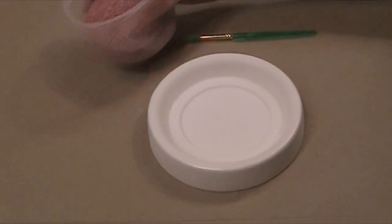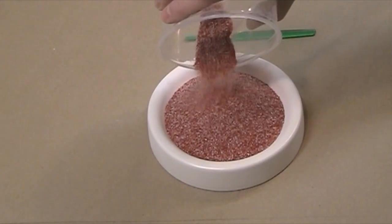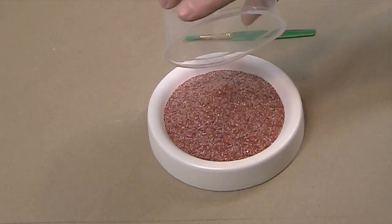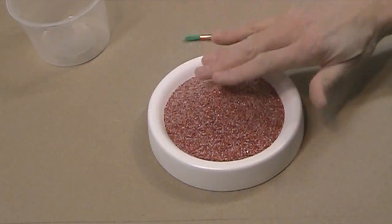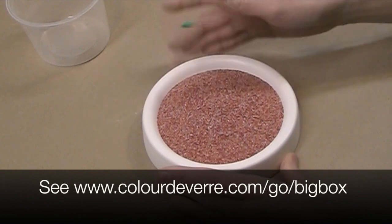The lid mold is filled with a 50-50 mixture of Uroboros Cherry Red Fine Frit and Uroboros Clear Frit. The frit mixture should be made level before firing. See our project sheets for complete firing schedules.